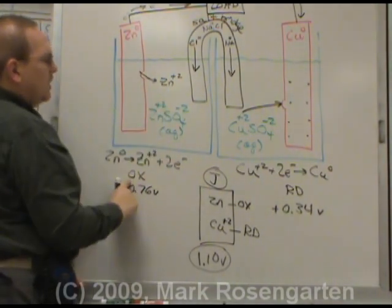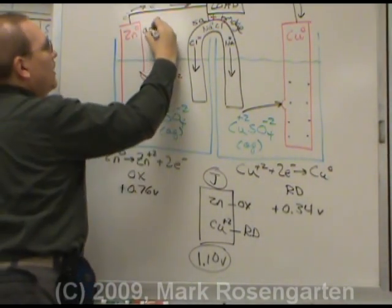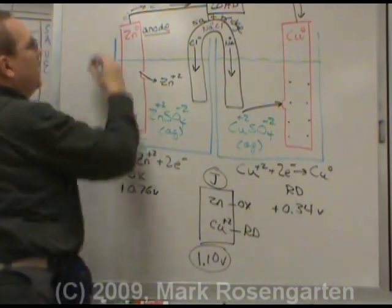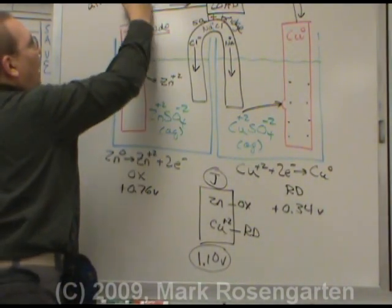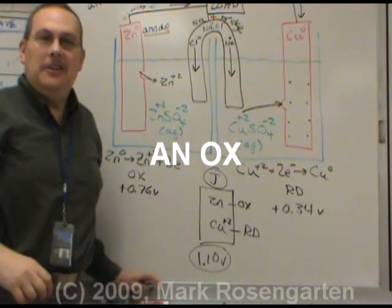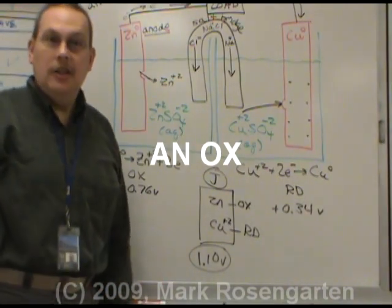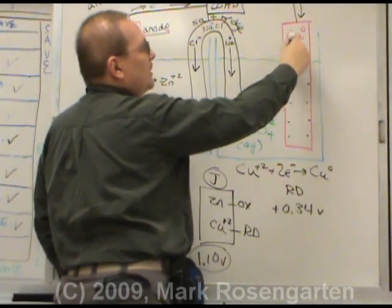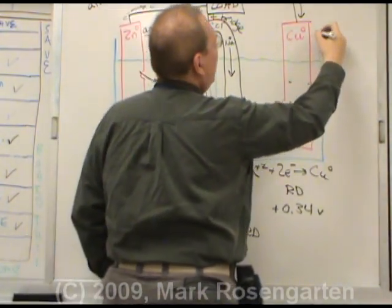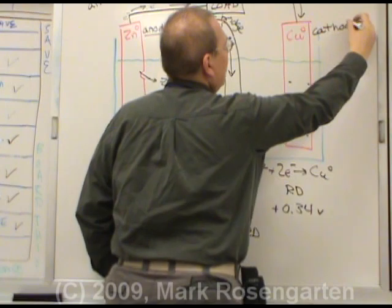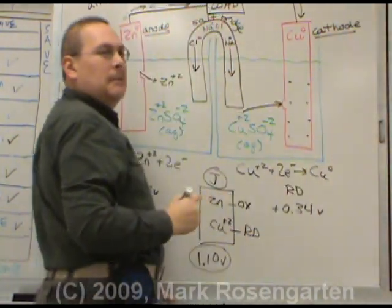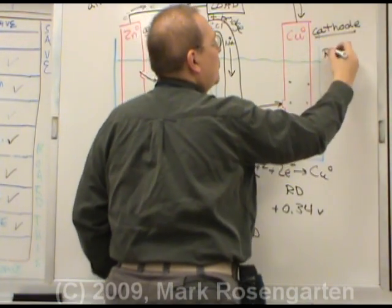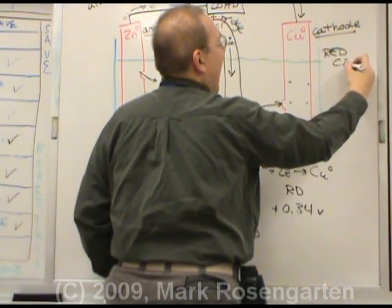Because zinc is undergoing oxidation we call this the anode. The way you can remember this is an ox - good lord is that an ox? Because reduction is taking place here we call this electrode the cathode. And the way to remember that is reduction takes place at the cathode - red cat.